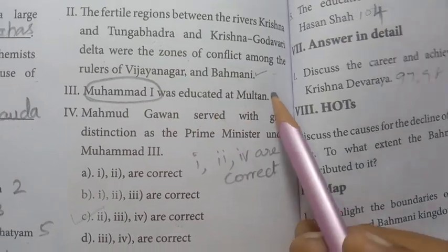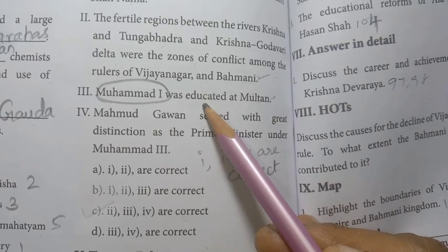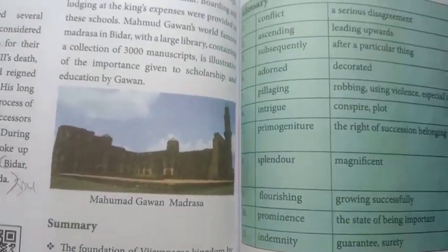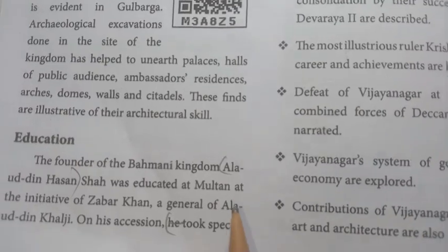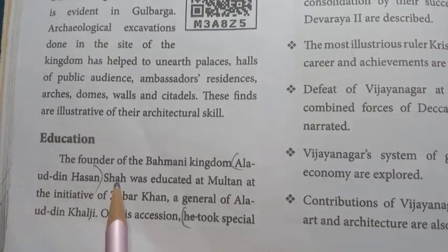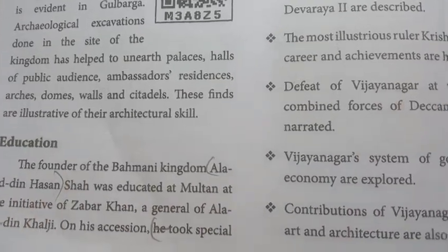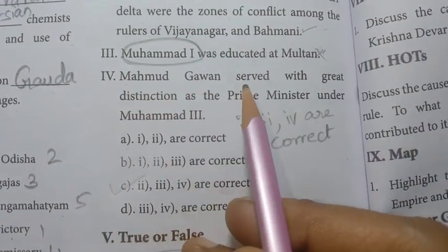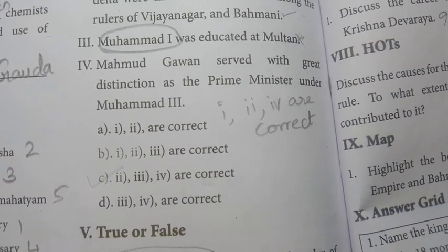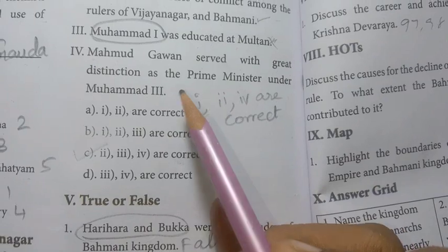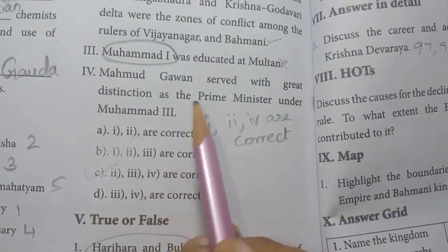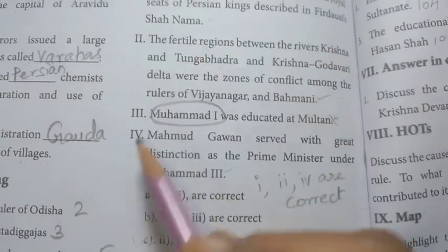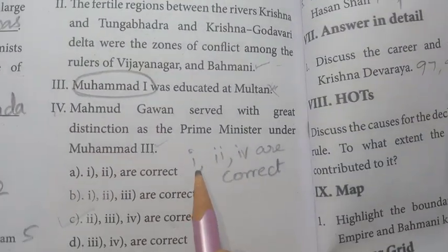Statement 3: Muhammad First was educated at Multan — this is a wrong statement. The correct answer is Alauddin. Statement 4: Muhammad Gavan served with great distinction as the Prime Minister under Muhammad Third — this statement is true.